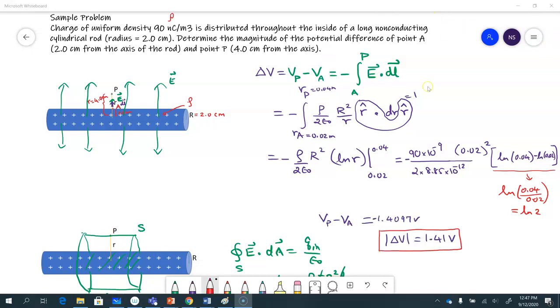V_P minus V_A will come out to be a negative 1.4097 volts, or round it to actually two significant figures. That's what I should have rounded it to, because everything is given in two significant figures. So I could just say it's 1.4 volts. So the answer would be 1.4 volts.